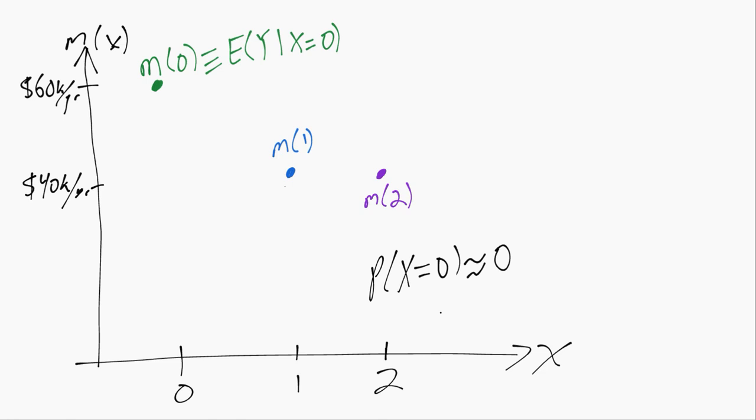So it would maybe look something like this, where it's not exactly going through the blue and purple, so it's not exactly flat with slope zero, but it's still fitting the purple and the blue much more closely than the green because of the way these probabilities affect the weights in the best linear approximation, which, as a reminder, is the same as the linear projection.